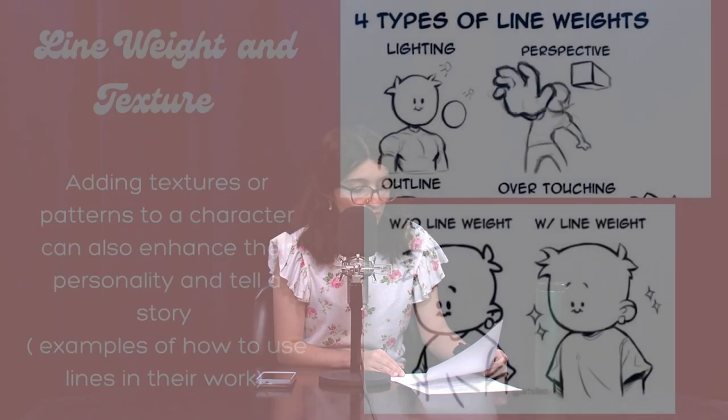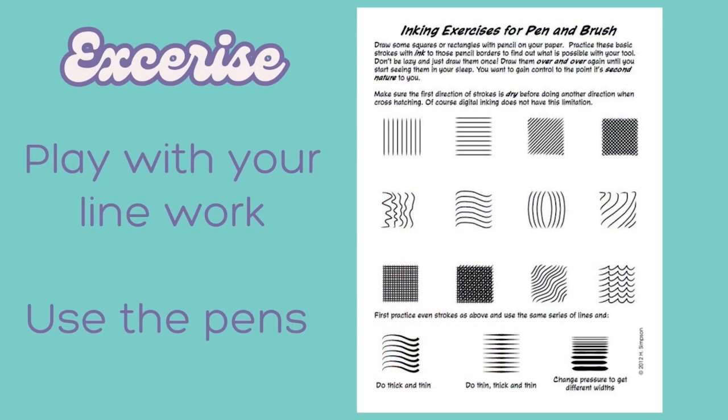Then you have your line weight and texture. Adding texture or patterns to a character can enhance their personality and tell a story. With line weight, you can tell what looks heavy and light by how thin the line is. I would like for you to play around with line weight. Start drawing and try different types of pens. Get micron pens for traditional work — they are a great brand to use. Or even change the size of the brush from your drawing software. Take some time to play around with crosshatching and line art for your character and explore what brush works for you.